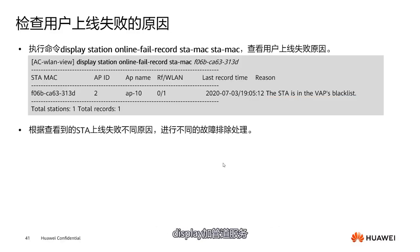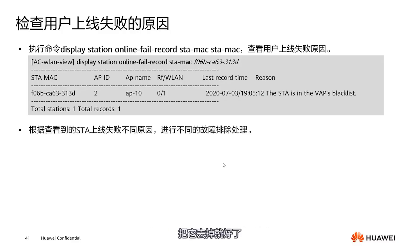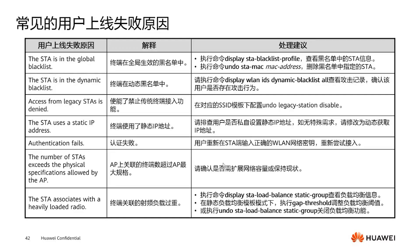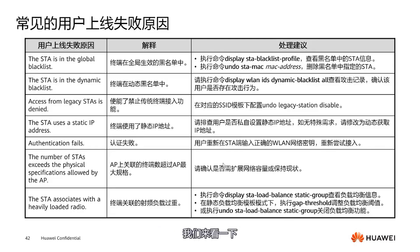There are many reasons for user online failure. For example, the blacklist — including the global blacklist, dynamic blacklist, and our VAP blacklist. Check specifically which blacklist the terminal is in. Generally, we don't use the blacklist manually, but it is used with IDS and IPS.